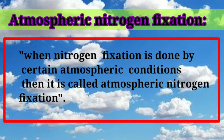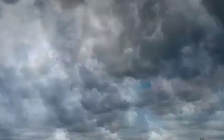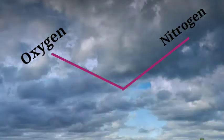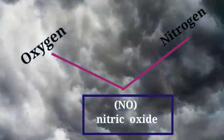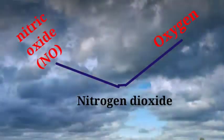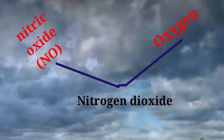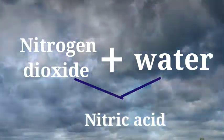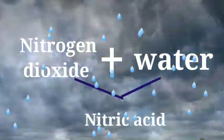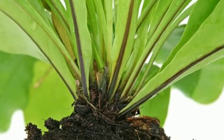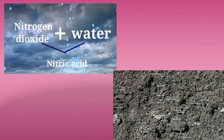In atmospheric nitrogen fixation, certain atmospheric conditions fix nitrogen. During lightning in the sky in the rainy season, nitrogen and oxygen in air react to form NO (nitric oxide). This nitric oxide is further oxidized to form NO2 (nitrogen dioxide). Nitrogen dioxide then dissolves in rainwater (H2O) to give nitric acid, which gets added to the soil with rainwater. Plants then use this nitrogen for protein synthesis. This completes the process of atmospheric nitrogen fixation.